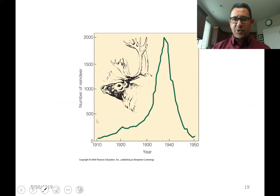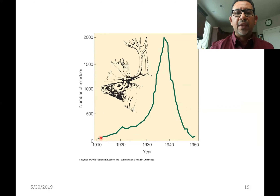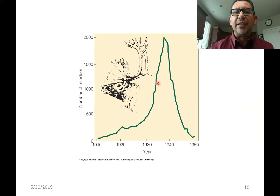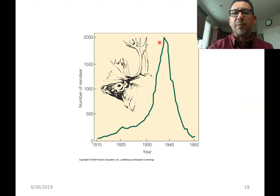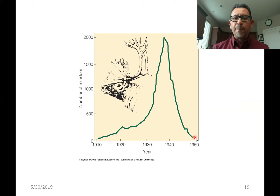This is exactly what happened with the 26 reindeer introduced to St. Paul Island in Alaska. At first, there was plenty of space, water, and food. But as numbers began to go up to 500, the population began doubling in a short amount of time. In just one year the population nearly doubled, and by the late 1930s it had reached 2,000 reindeer. By then, they had eaten just about all the available plants, and what followed immediately was a population crash — numbers went down and continued to go down until only a very small handful survived.